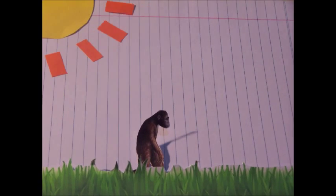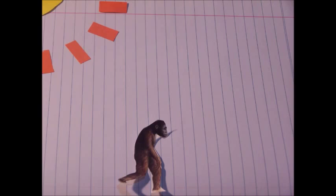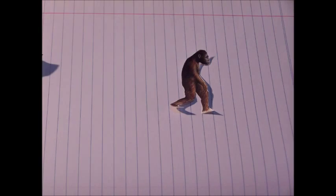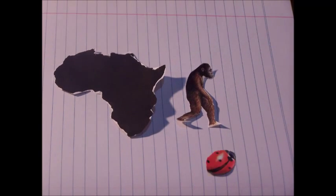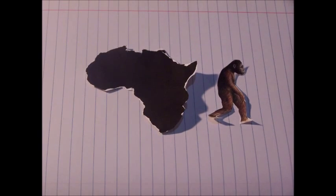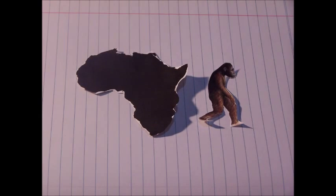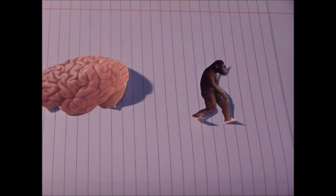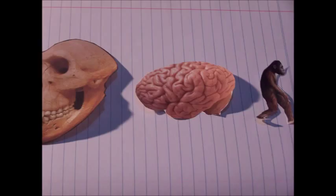Australopithecus afarensis was one of the longest lived and best known early human species. Also named Lucy's species after a famous fossil, they lived from 3.85 to 2.95 million years ago in Eastern Africa. They had ape-like human characteristics and face proportions.